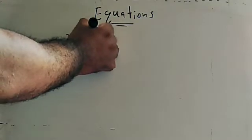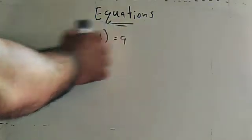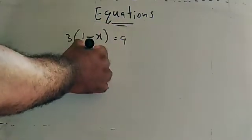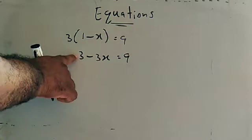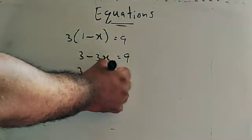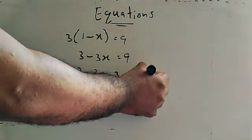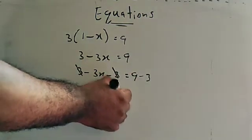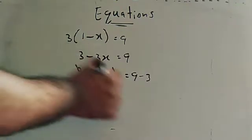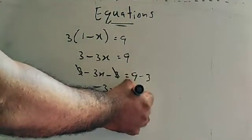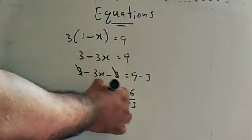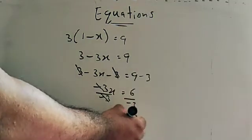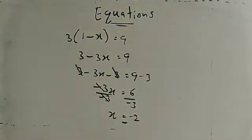Also, look at this example: 3 times (1 minus x) is equal to 9. Remove the brackets: 3 into 1 is 3, 3 into minus x is minus 3x. So 3 minus 3x equals 9. To cancel plus 3, add minus 3 to both sides. Plus 3 and minus 3 cancel, leaving minus 3x. Nine minus 3 equals 6. Divide both sides by minus 3. Minus 3 and minus 3 cancel, leaving x. Six divided by 3 — minus divided by minus gives plus — so x is equal to minus 2.